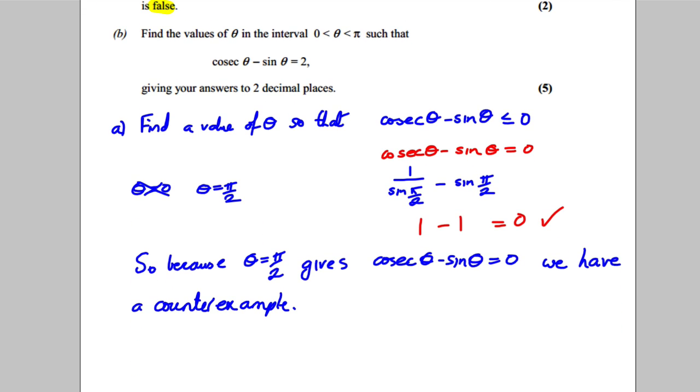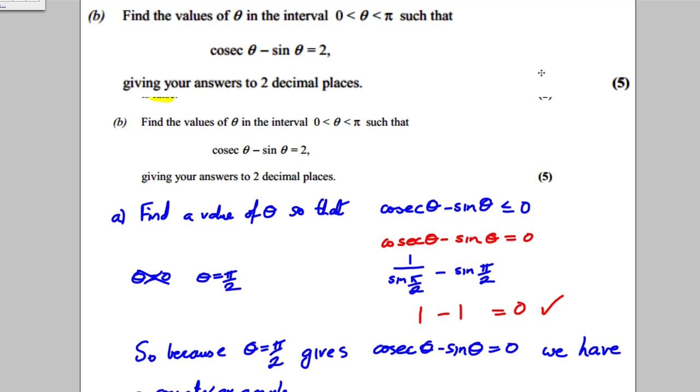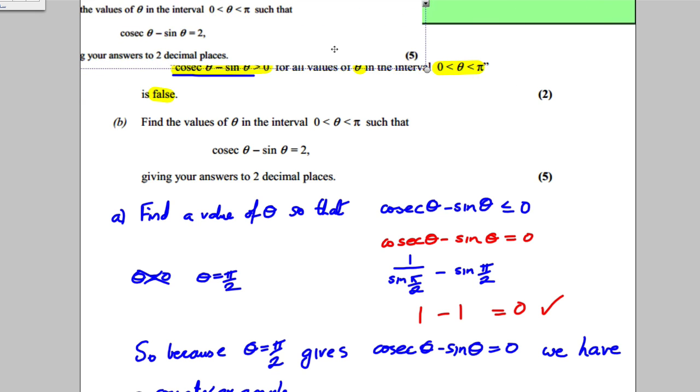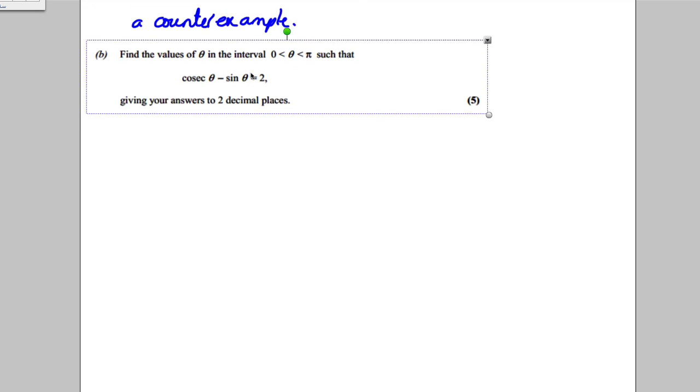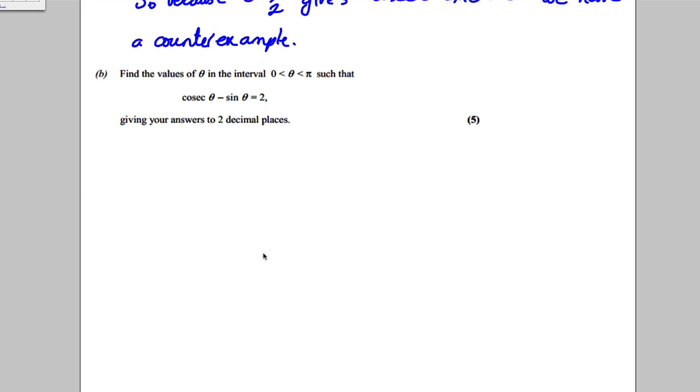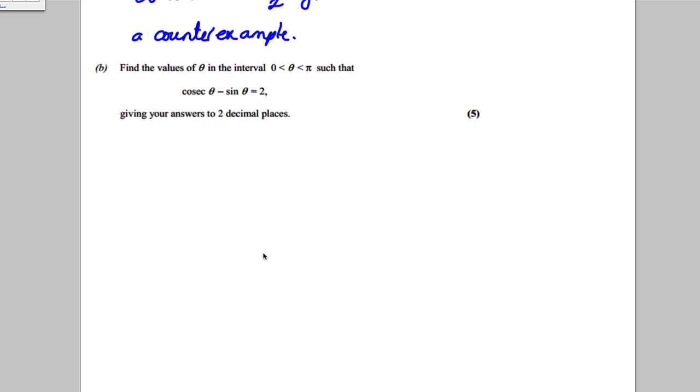Then for part b, it says find the values of θ in the interval zero to π, such that this thing is equal to two, give your answer to two decimal places.